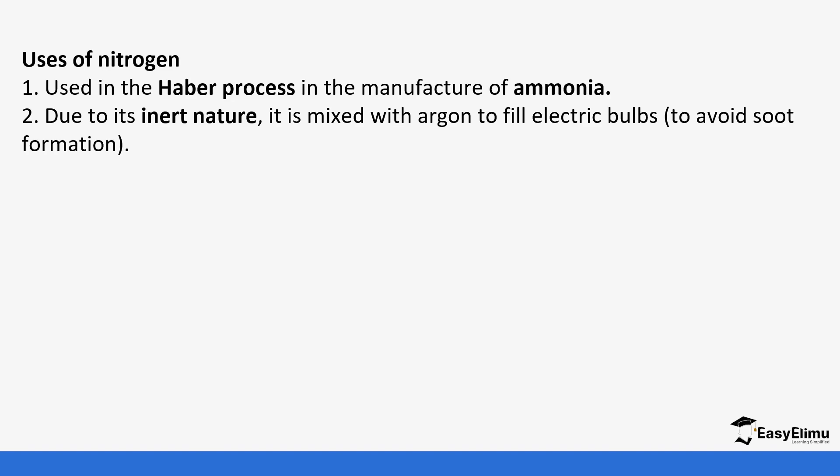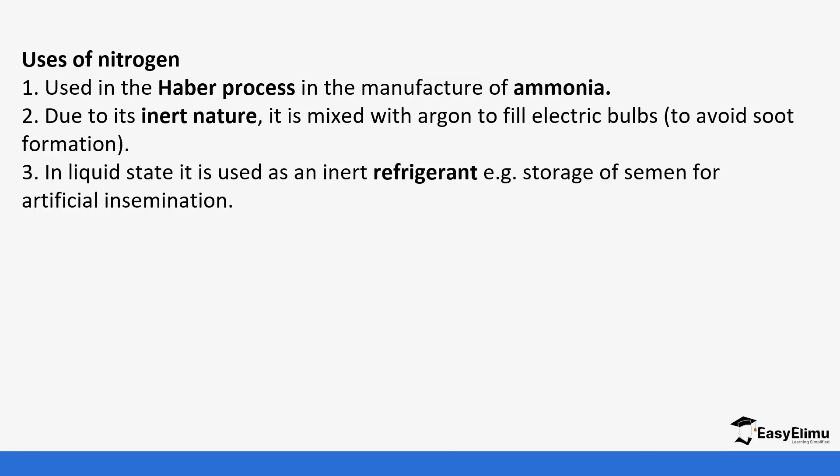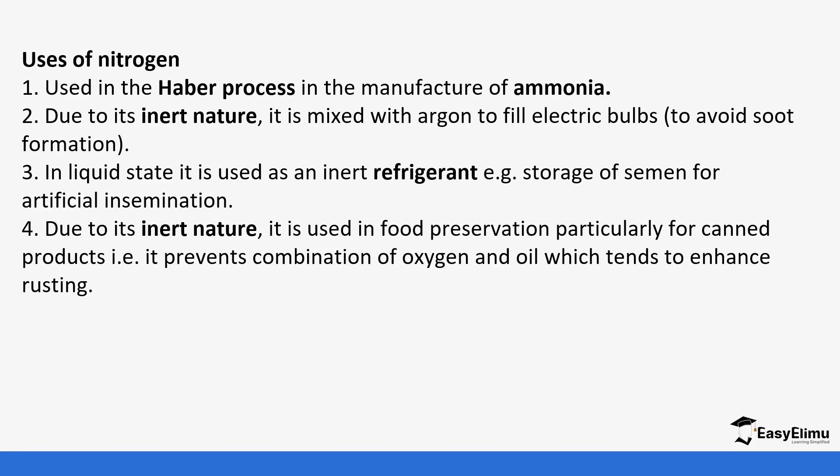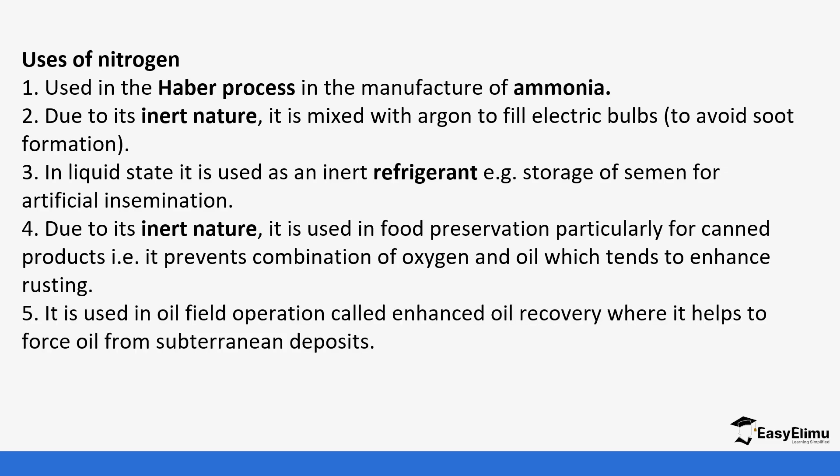Finally, we are going to look at some of the uses of nitrogen. Nitrogen is used in the Haber process in the manufacture of ammonia. We're going to go into details in the Haber process later on in one of the videos. Because of its inert nature, it's usually mixed with argon and used to fill electric bulbs. This helps to avoid formation of soot. It is also used as a refrigerant, and commonly it's used in storage of semen for artificial insemination. Because of its inert nature, it is used to preserve the water and other food, particularly the ones that are in canned products. It prevents the combination of oxygen and oil which usually tends to increase rusting or making the food go bad. It is also used in oil field operations called enhanced oil recovery where it helps to force oil from subterranean deposits.